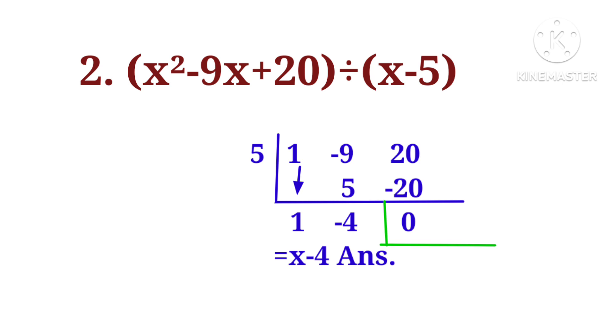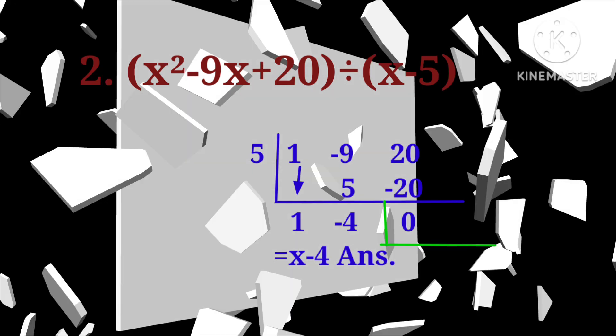Here, we write down 1, and now 5 times 1... minus 9 plus 5 is equal to minus 4. Minus 4 times 5 is equal to minus 20. So, after adding, we get 1, minus 4, 0, where 0 is remainder. So, answer is x minus 4.